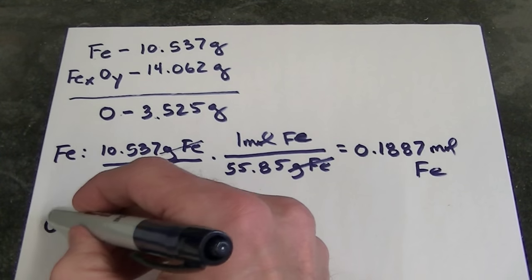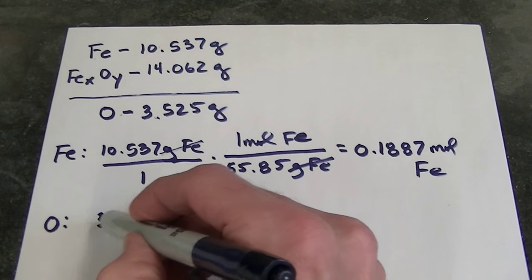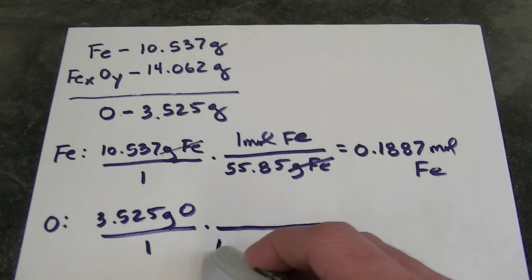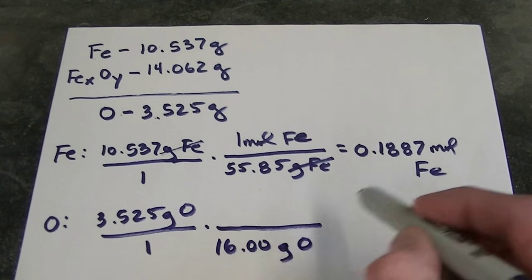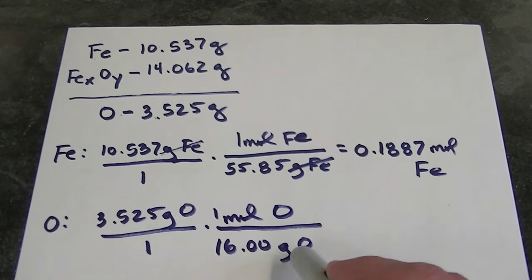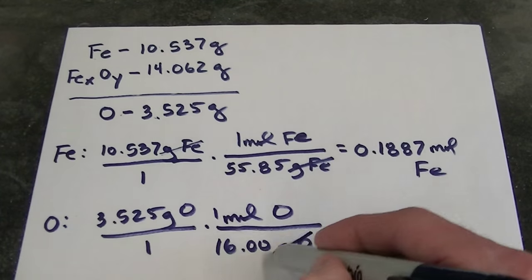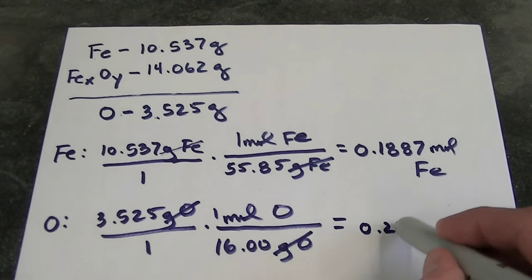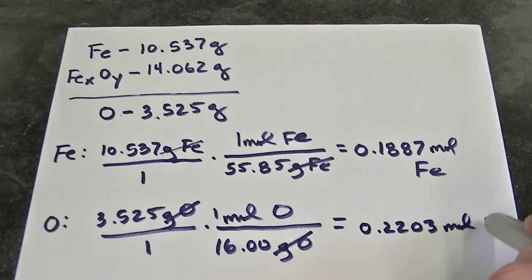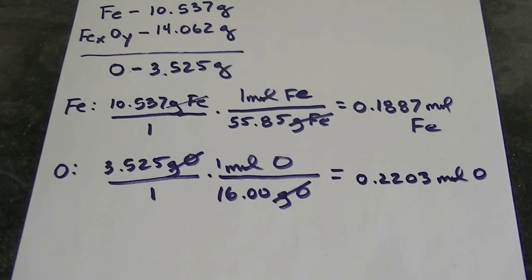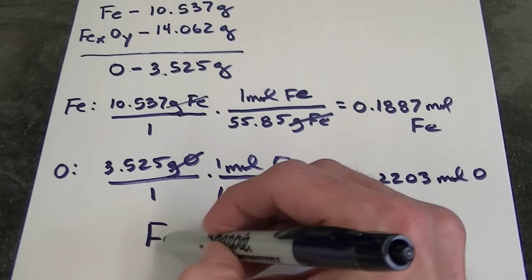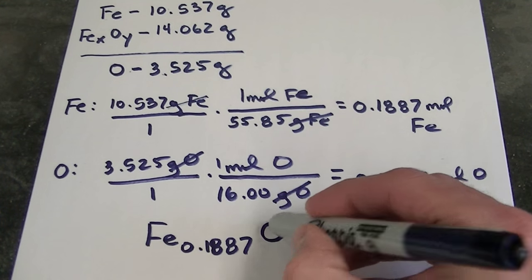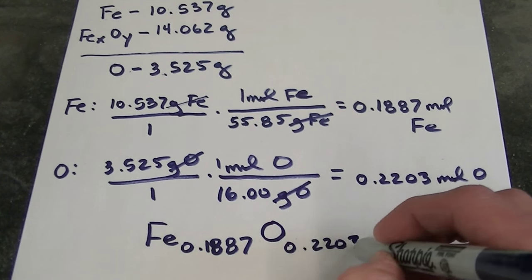Let's do the same thing for oxygen. Well, I have 3.525 grams of oxygen in the iron oxide that I collected. I see that if I divide this by 16 grams per mole, that's the molar mass of oxygen. 16 grams of oxygen is a mole of oxygen. Then I will convert my grams of oxygen into moles of oxygen. 3.525 divided by 16 comes out to 0.2203 moles of oxygen. So I now have my molar ratio of iron to oxygen in the compound. There we go. 0.1887 moles of iron for every 0.2203 moles of oxygen.